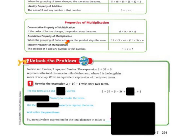The associative property of multiplication is similar to the addition one. When the grouping of factors changes, the product stays the same. So with 11 times 3 times e, all they did was combine the like terms 11 and 3 on one side, and then put times e on the outside.